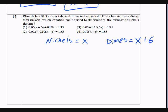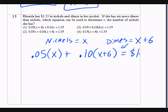Now what is the value of a nickel? Nickel is 5 cents, or 0.05 of a dollar, times the number of nickels, x, plus what is the value of a dime? That is 0.10, 10 cents, times the number of dimes, which is x plus 6, is going to give you the total of $1.35.